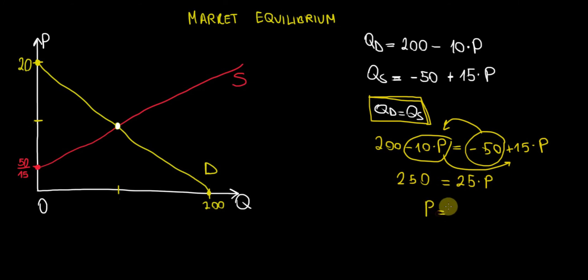Now what's going to be the price? 250 over 25 and that's going to be equal to 10. This is going to be the equilibrium price. Now the buyers and the sellers agree on the equilibrium price of 10, let's say dollars per unit.